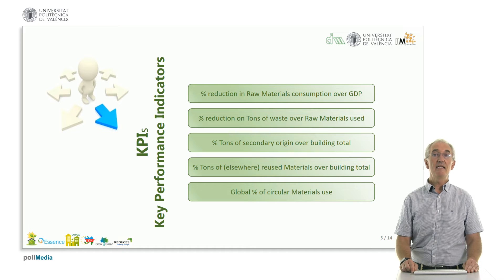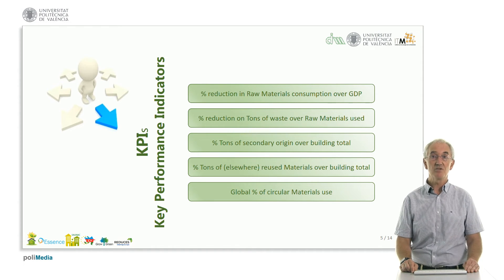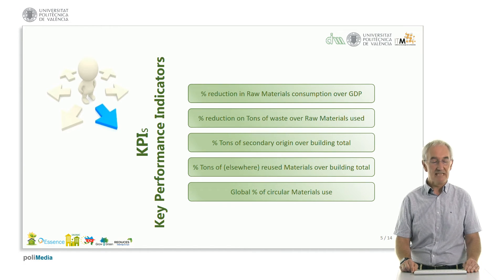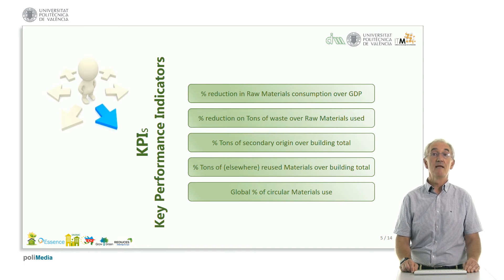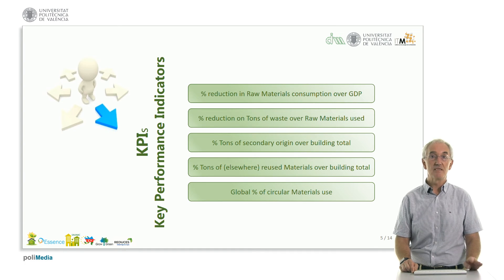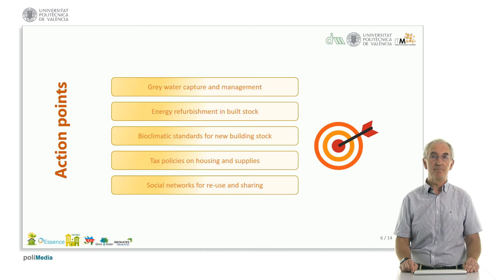The KPI indicators are the most important ones: the reduction of raw materials, the reduction of waste, and the increase of tons of secondary origin because that will also drive better life cycle results. The materials which are reused — which is much more important than recycled and re-taken in the production circle — and finally the global circularity of material use. That is the main final objective of the KPIs.